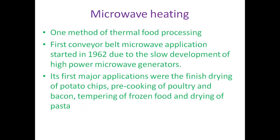Microwave heating is one method of thermal processing. The first conveyor belt microwave application started in 1962, and slow development was due to limitations in high-power microwave generators. The first major applications were the finished drying of potato chips, pre-cooking of poultry and bacon, tempering of frozen food, and drying of pasta.